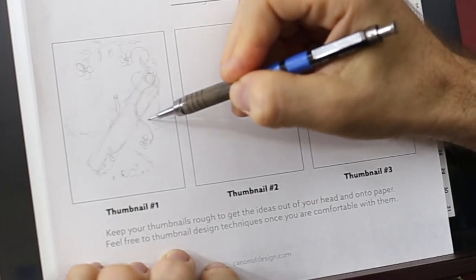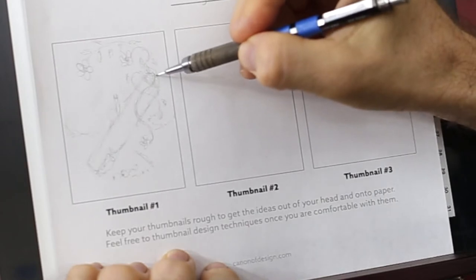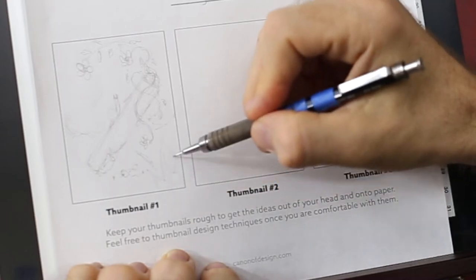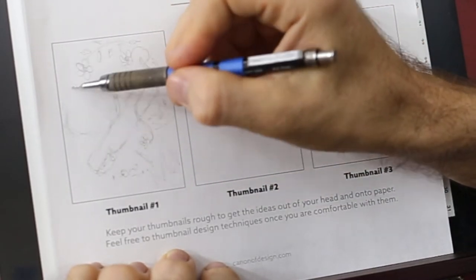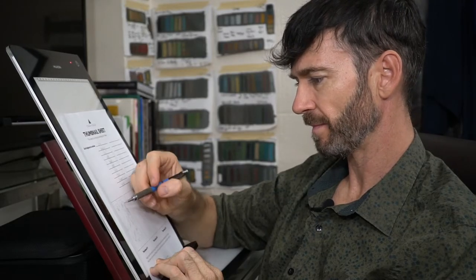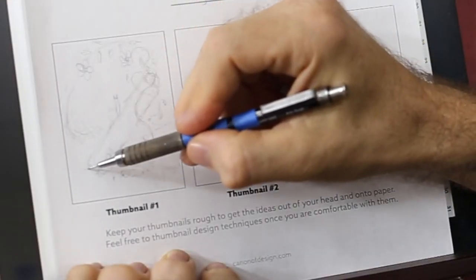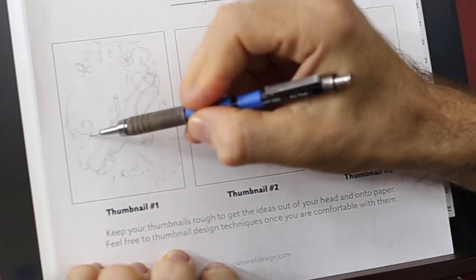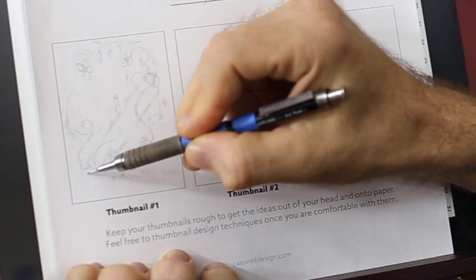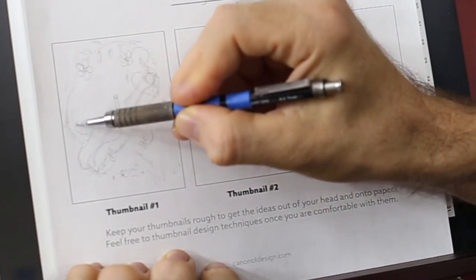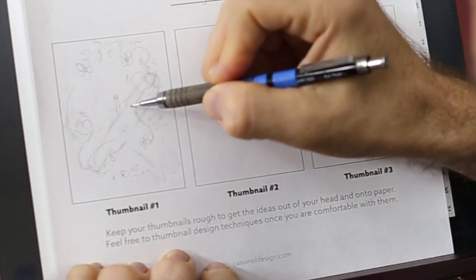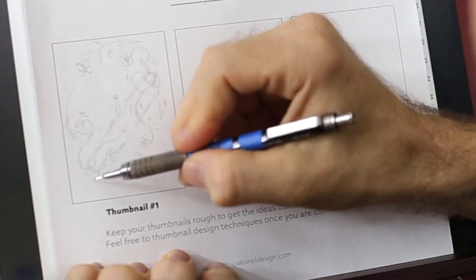Some more vines, some grass right here. You want to kind of fill in this negative space, maybe create more of the environment, and then some roots.